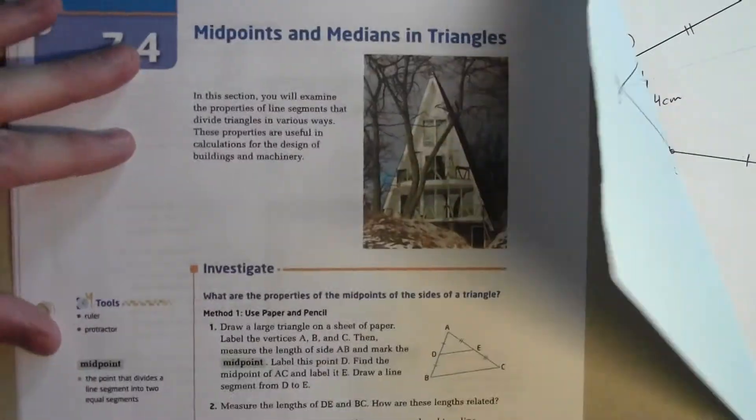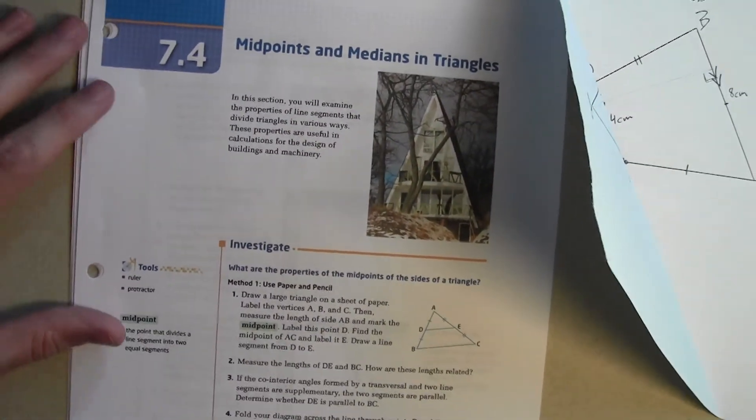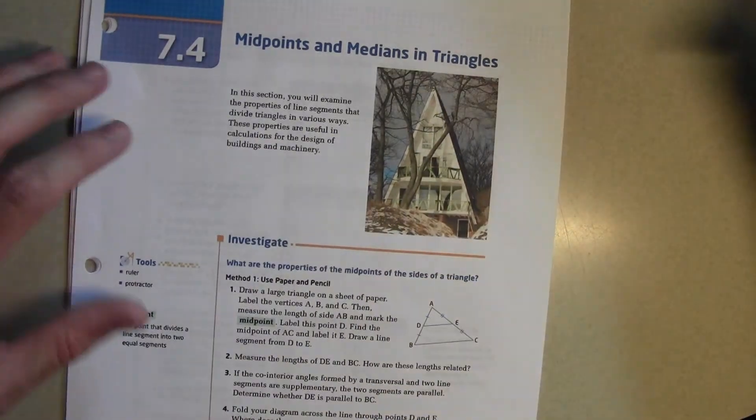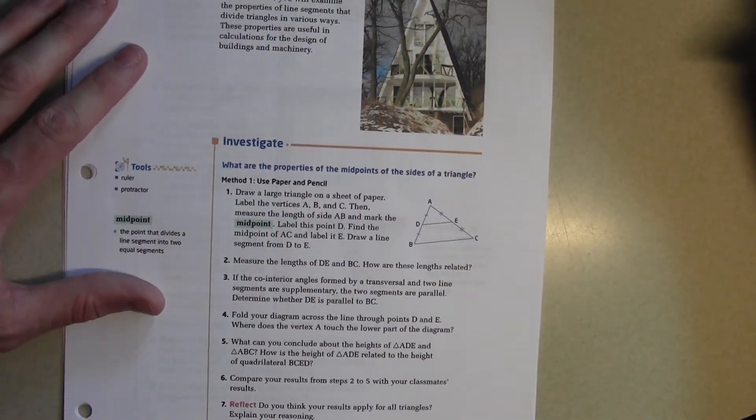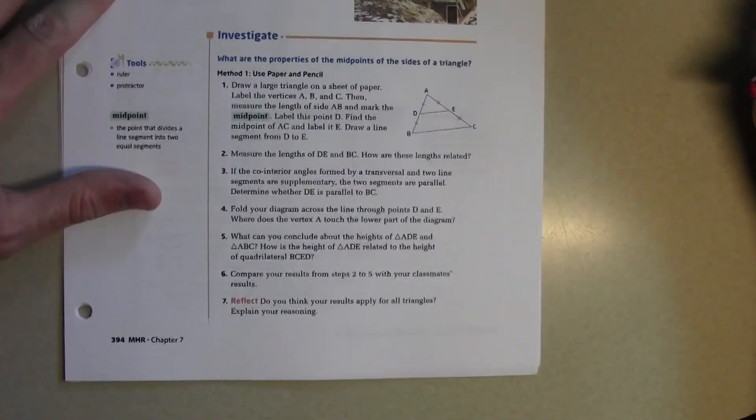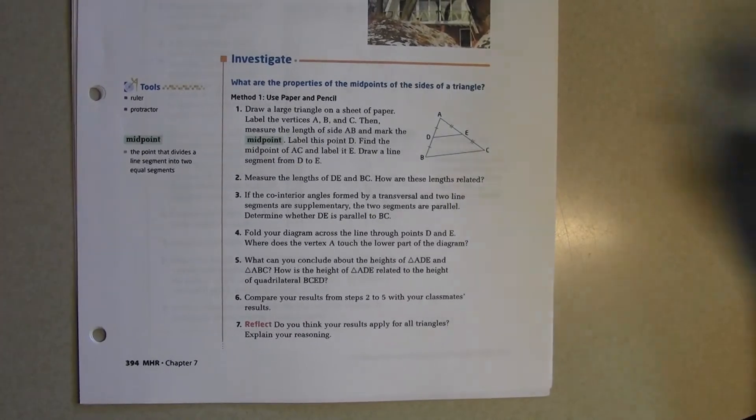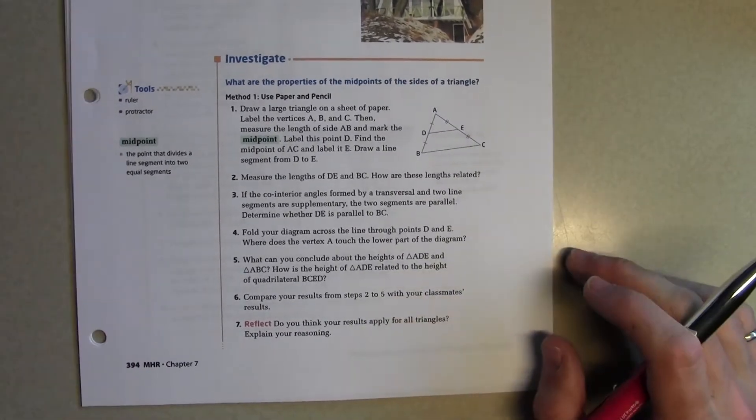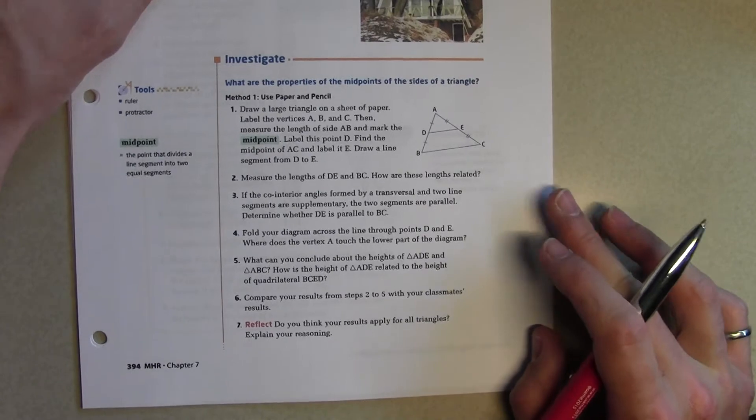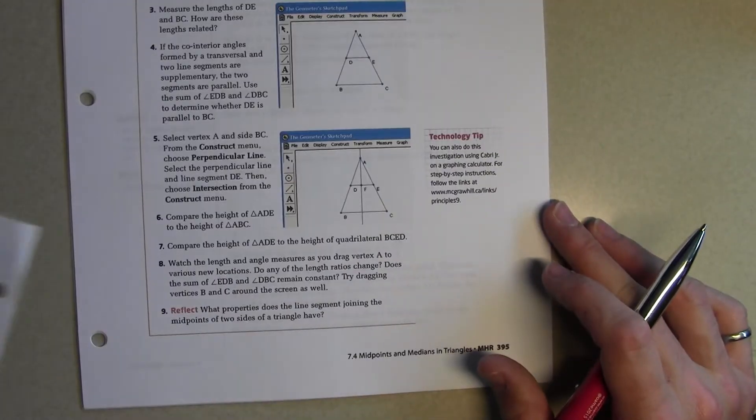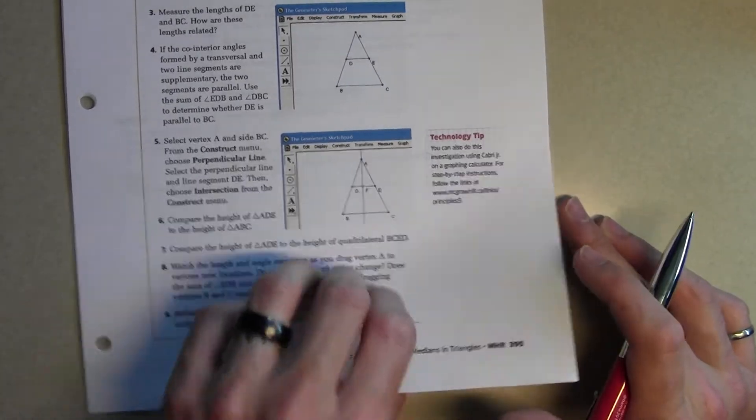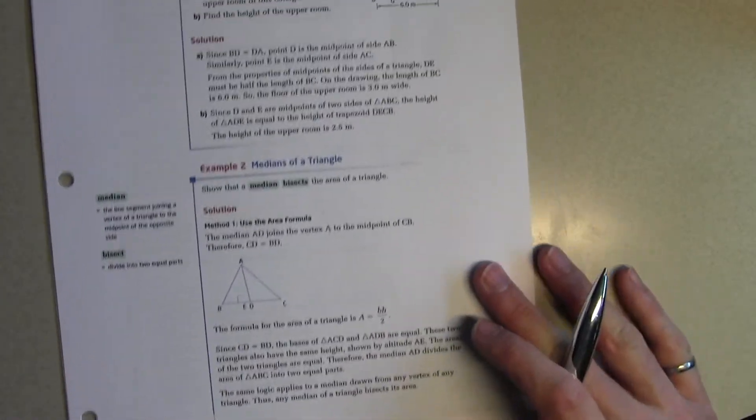Compare your results from step 2 to 5 with your classmates. Reflect. Do you think your results apply for all triangles? Explain your reasoning. So I'm hoping that you guys had similar results. Did you? Yes, we did, right? So we can conclude then that the properties are the same.